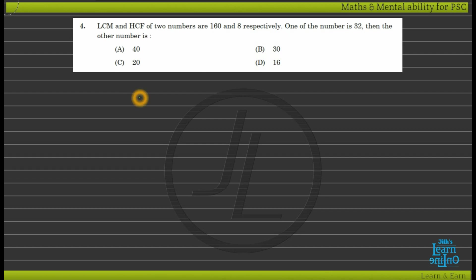Using the property that LCM multiplied by HCF equals the product of the two numbers: LCM is 160 and HCF is 8. One number is 32, so we can find the other number.